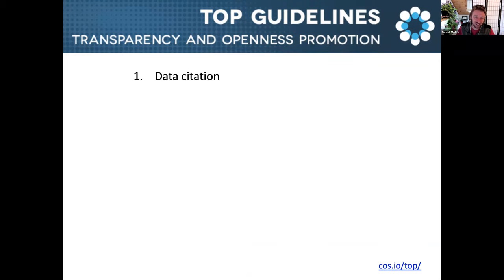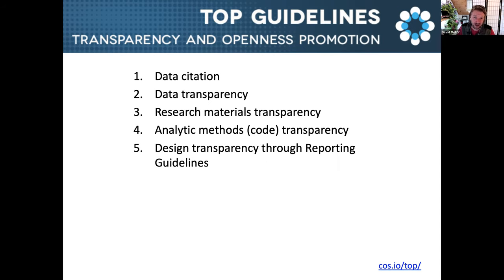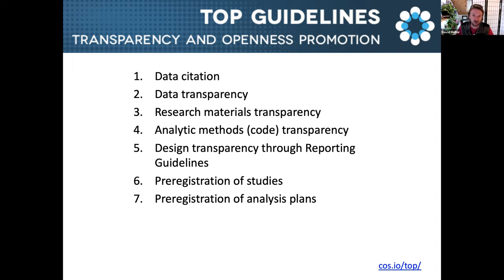The first standard includes data citation recommendations. The second, third, and fourth are transparency guidelines for data, materials, and analytical code transparency. They then include guidelines for design and analysis transparency through use of reporting guidelines and checklists. It includes recommendations for how to incentivize pre-registration with or without analysis plans, and finally, recommendations for how to publish or support replication research studies.